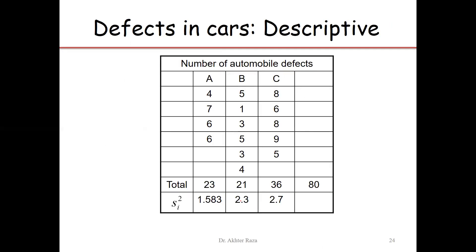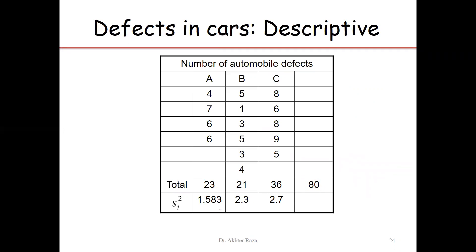The column totals are calculated: total for model A is 23, model B is 21, model C is 36, and the grand total is 80. The variance of each sample is computed: the first variance is 1.5, second is 2.3, and third is 2.7. Taking the square root of these gives the standard deviations.